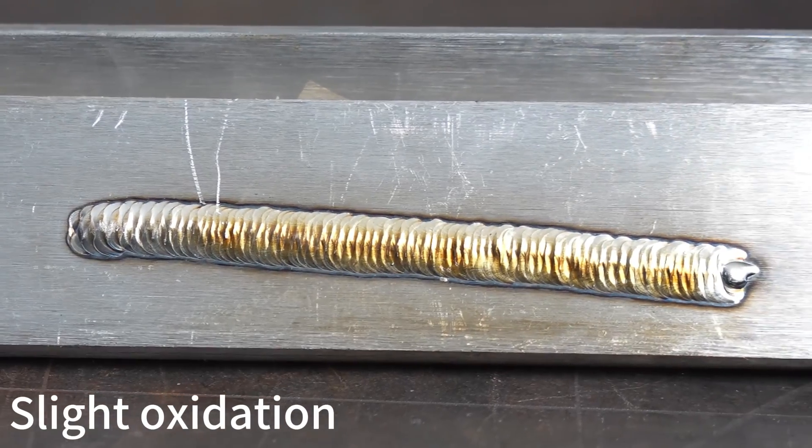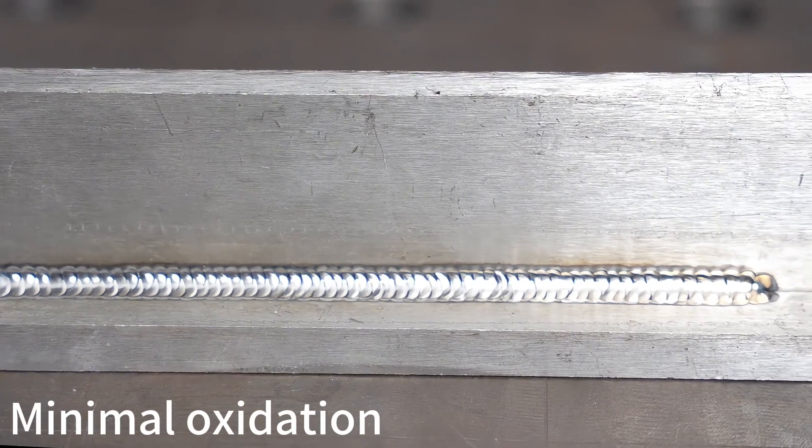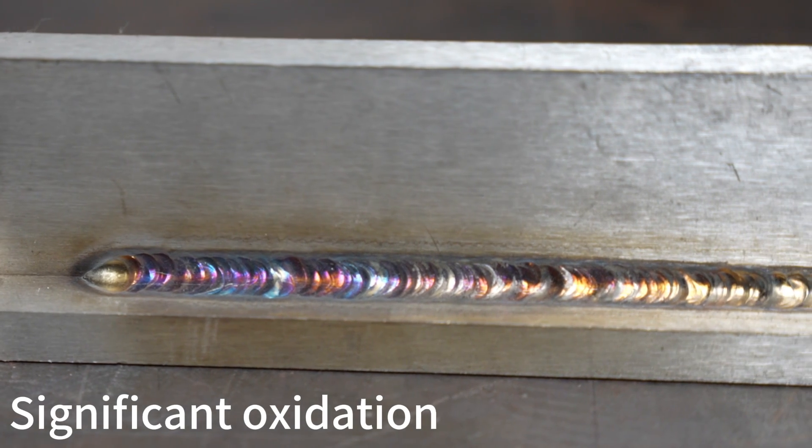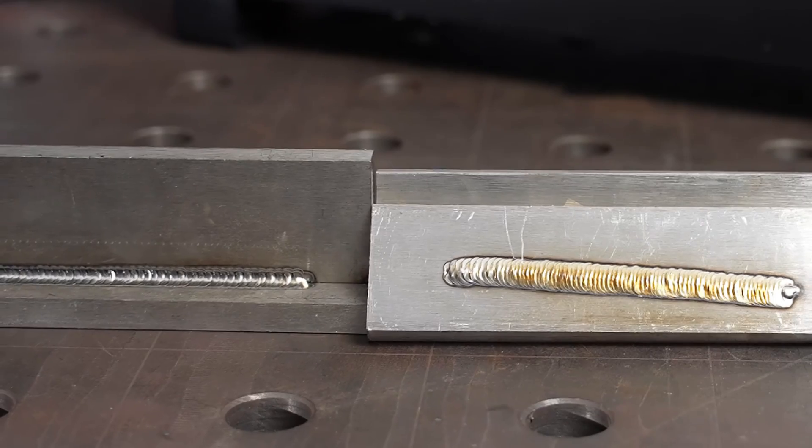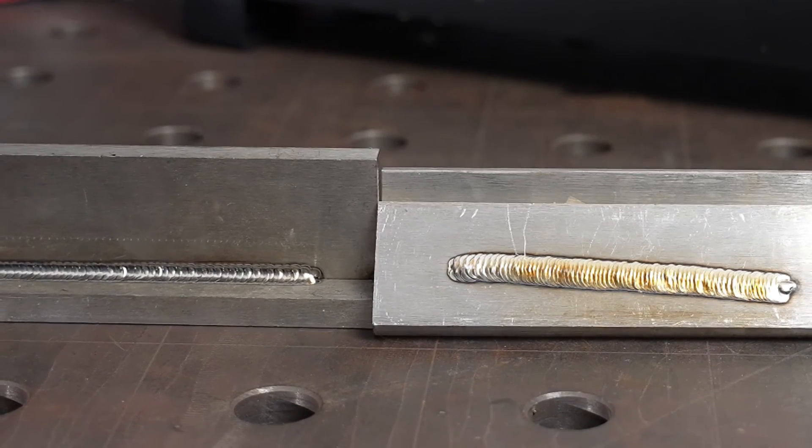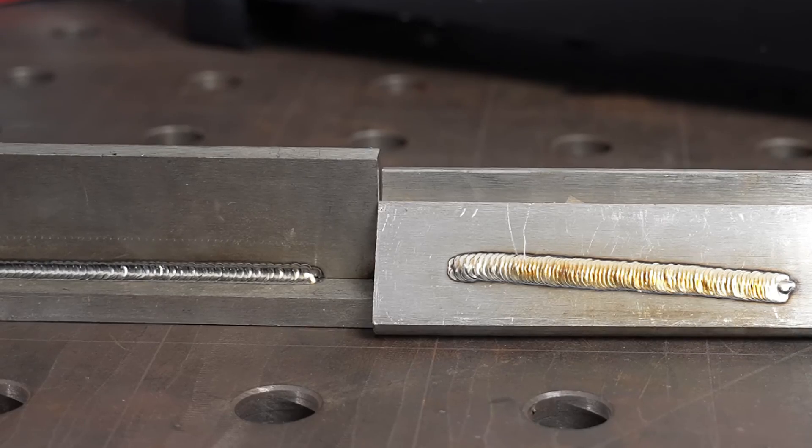Gold TIG welds are visually appealing, and this golden hue is the result of a controlled oxidation process. However, it is important to note that the gold color represents some level of oxidation, which can reduce corrosion resistance.